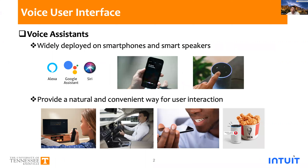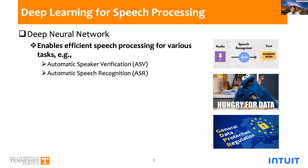Voice assistants such as Alexa and Google Assistant are widely used on smartphones and smart speakers as a natural and convenient means of interaction. They have also been integrated into mobile banking for secure identity verification and hands-free vehicle operation for enhanced convenience and safety. The modern voice user interface is powered by deep neural networks, which enables efficient speech processing for many tasks such as automatic speaker verification and automatic speech recognition.